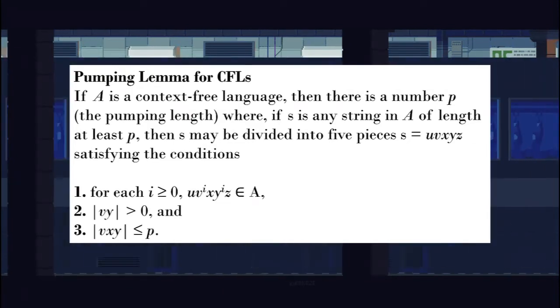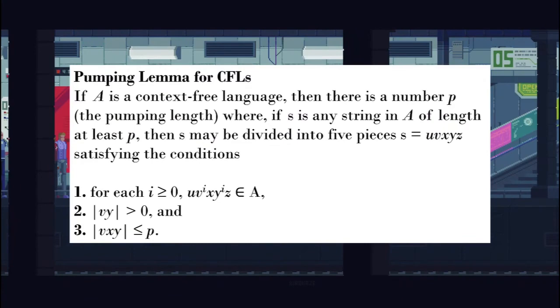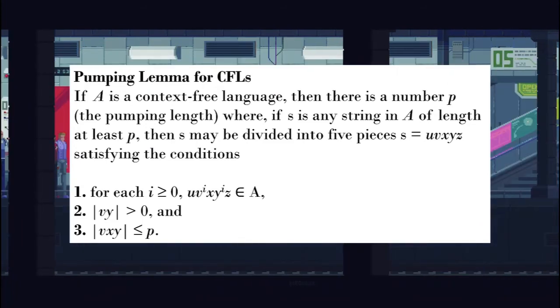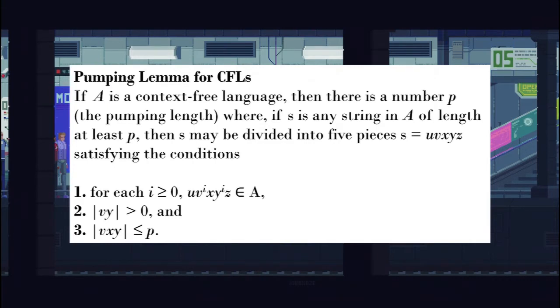As you can see, the lemma is analogous to the one for regular languages but with the strings having five parts instead of three, as captured by condition number one. Condition two says that either V or Y is not the empty string; otherwise the theorem would be trivially true. Condition three states that the pieces V, X, and Y together have length at most P.